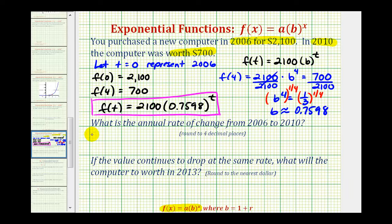So we would have 0.7598 equals one plus r. So we'll subtract one on both sides. This difference here is negative 0.2402. It's negative because the value is decreasing.